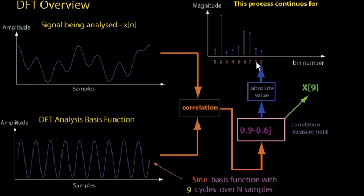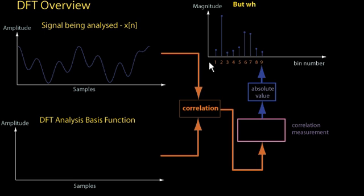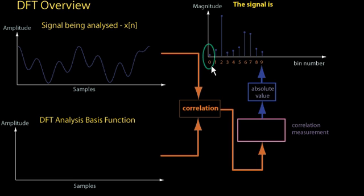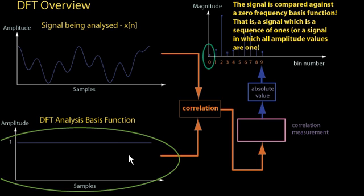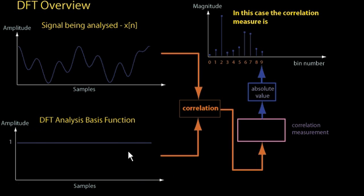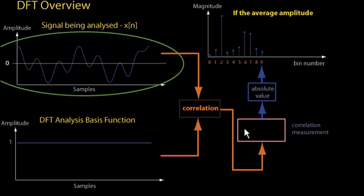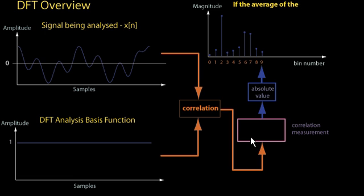The overall process continues for N bins in total, where N is the length of the signal X. Bin zero is handled in a slightly different way. For this case, the signal being analyzed is compared against a sinusoidal basis function which is zero frequency — in other words, a basis function that doesn't oscillate. The signal used in the comparison is just a sequence of ones. The correlation measure is dependent upon the average amplitude of the signal being analyzed. If the average amplitude is zero, the correlation measure will be zero. If the average amplitude deviates from zero, the correlation measure will increase accordingly.